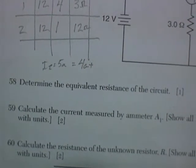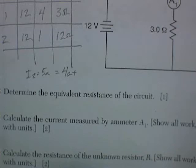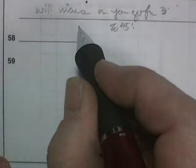Determine the equivalent resistance of the circuit. That's worth 1 point. So for 1 point, all they want is the answer. And there it is. They gave you the unit. So it was 2.4 ohms.